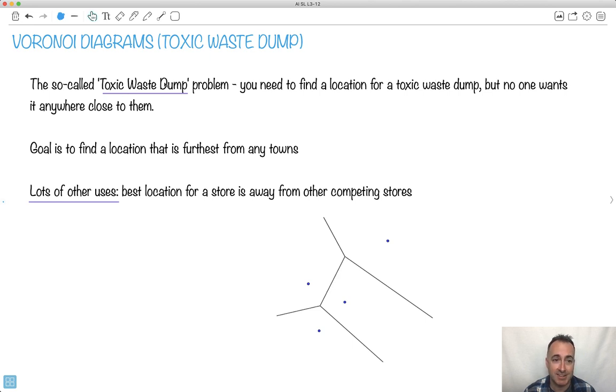This obviously doesn't just have to be with toxic waste. It could be lots of things. But the idea is you want to find a location that's furthest from any of the other sites. So this could be real practical things. What if you're opening up a store or something like that? And there's other stores that compete against you and maybe you don't want to be so close to them.